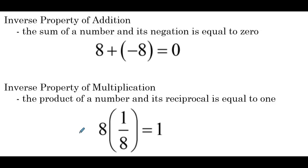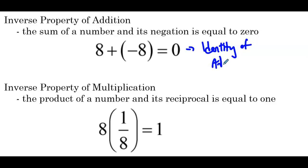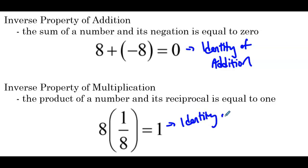Inverses mathematically are all about undoing. So if we have 8, how do we undo adding 8? That would be adding negative 8. If we're multiplying by 8, how do we undo that? We multiply by 1/8. An important thing to identify here is in the inverse property of addition, we get 0, which is the identity of addition — if we add 0 to any number, it remains unchanged. Similarly, the inverse property of multiplication: if we multiply two multiplicative inverses, we get the identity of multiplication.